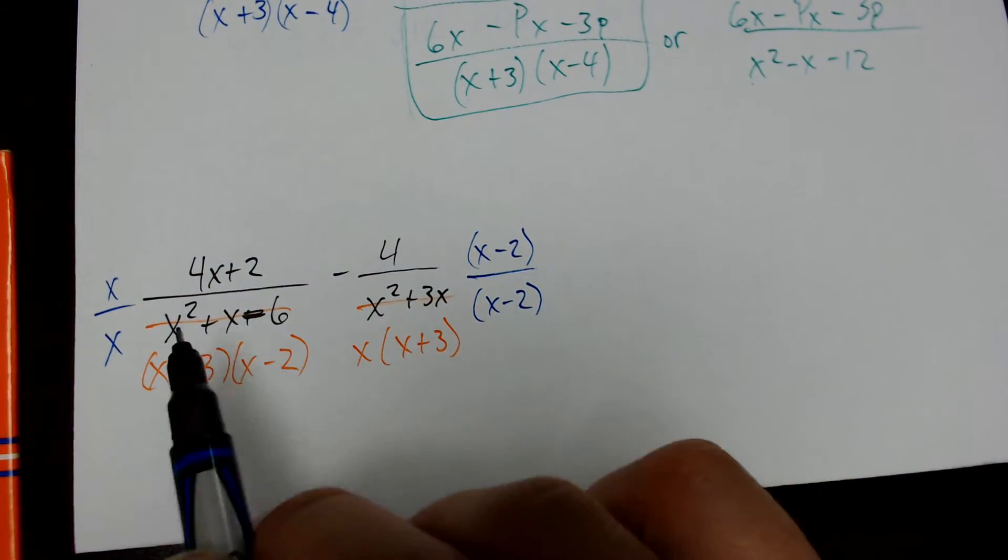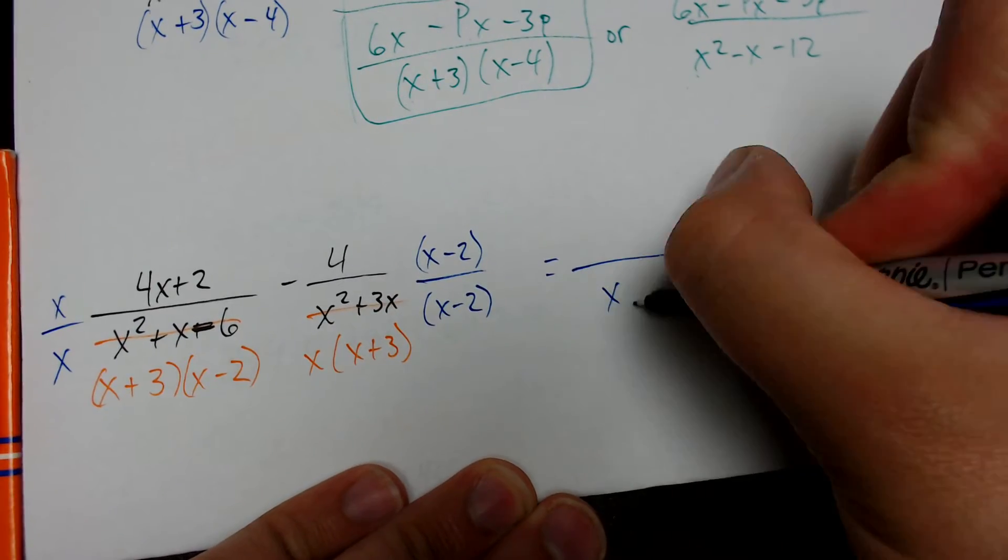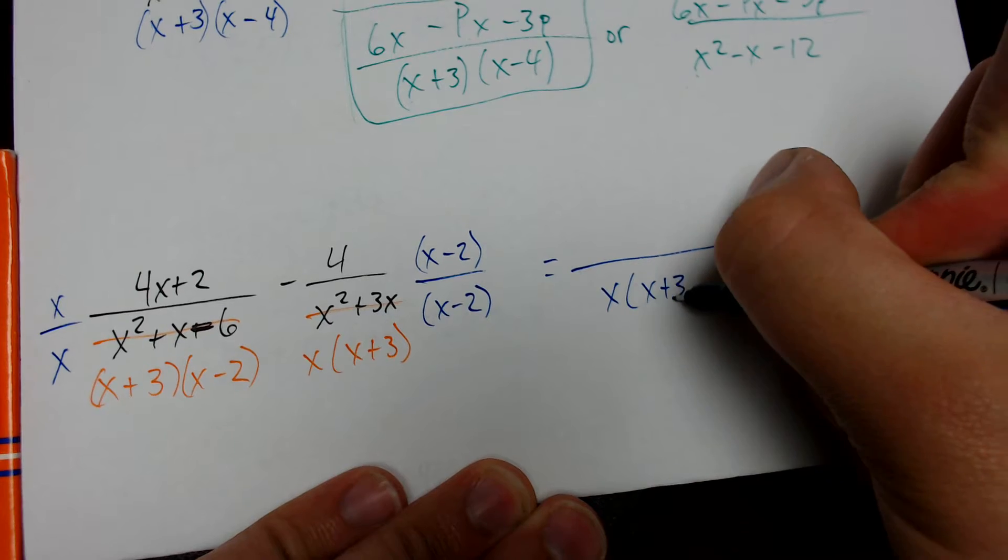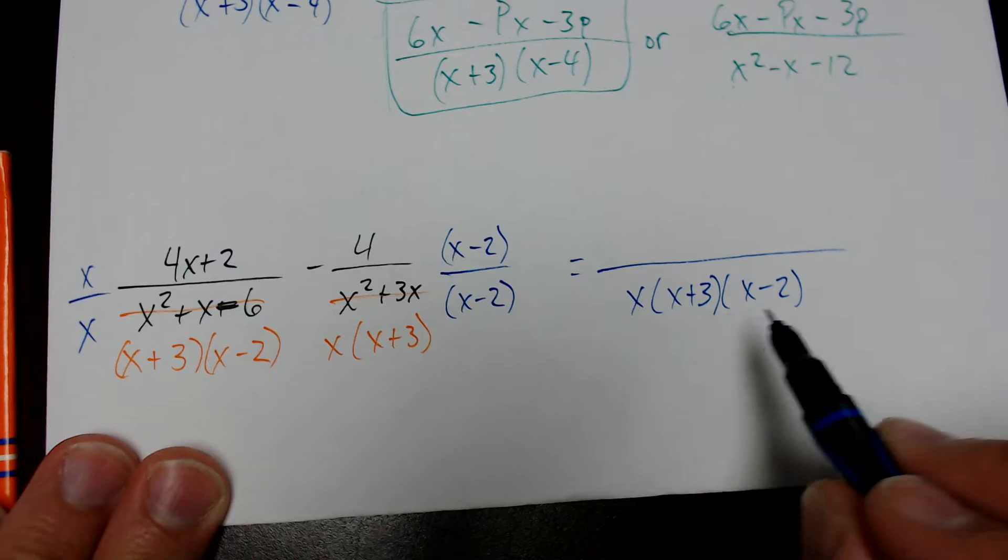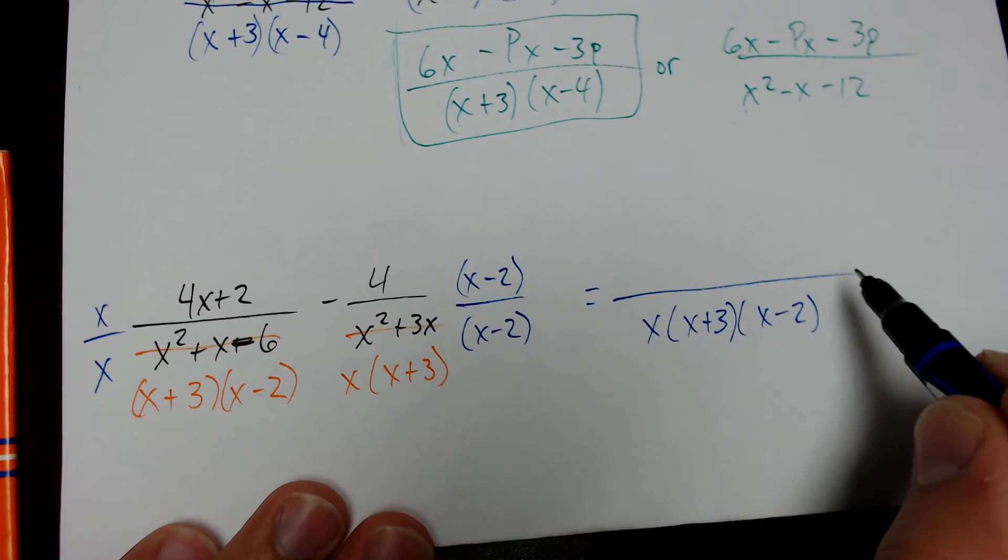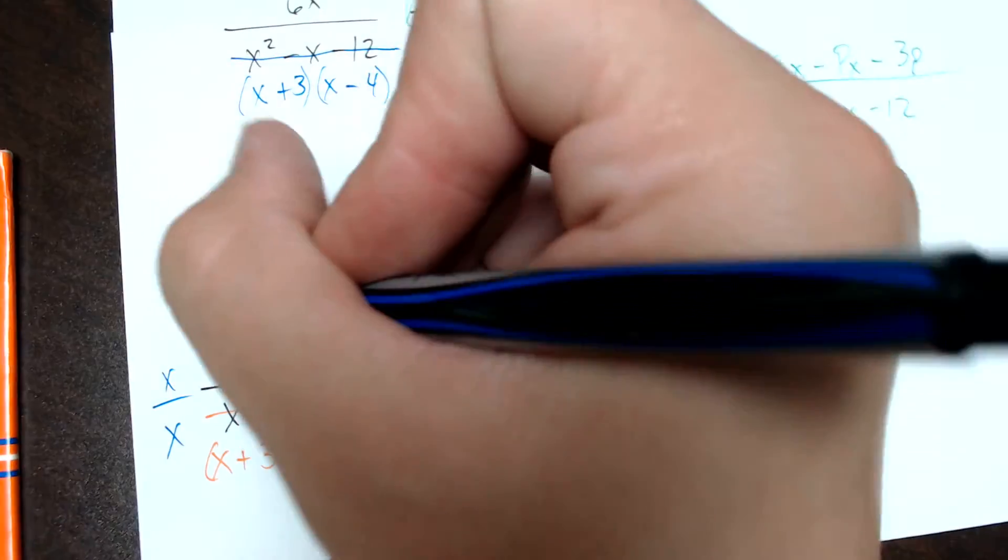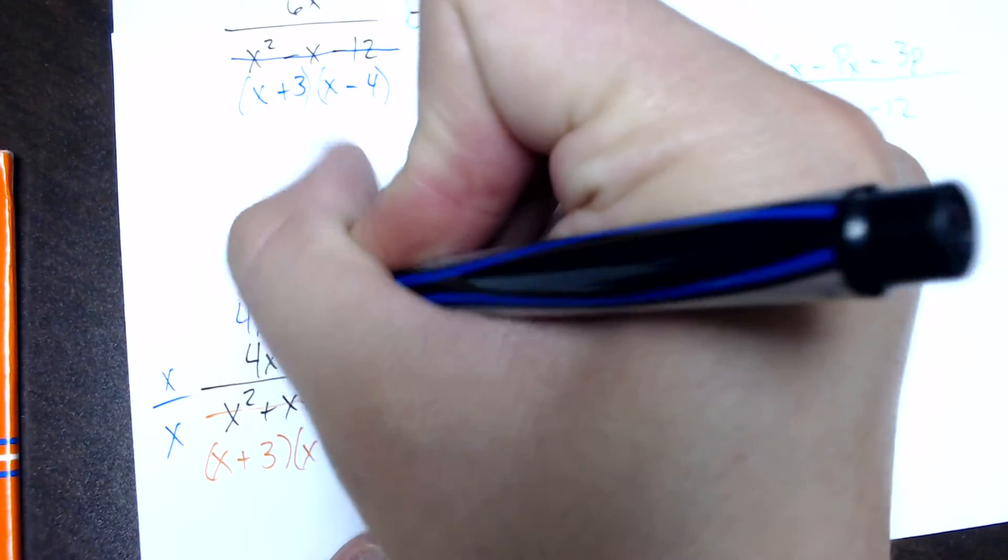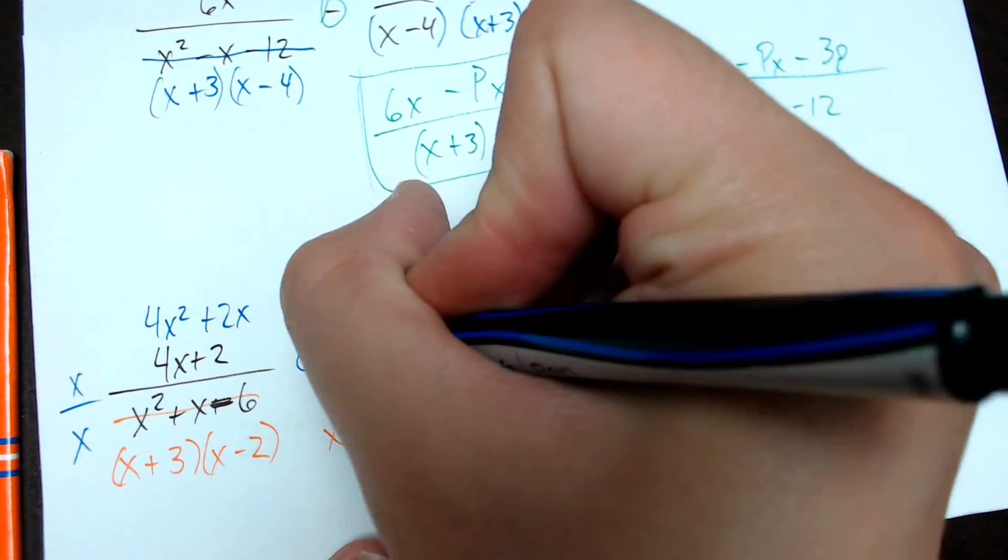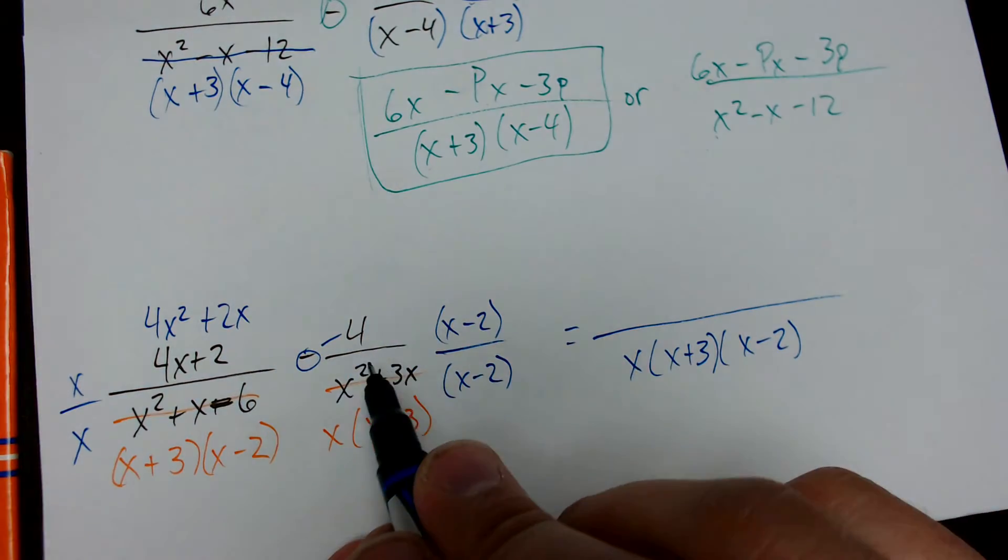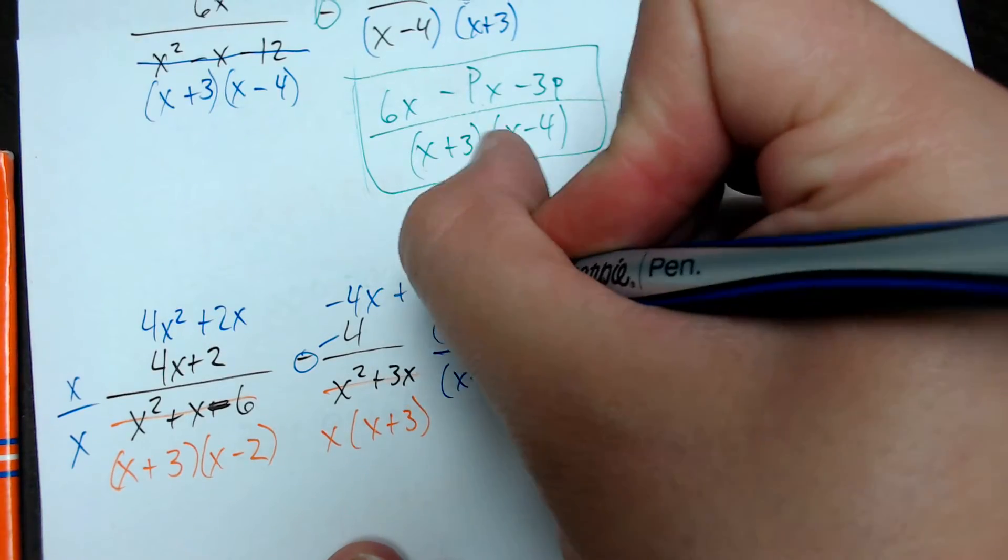So, when I multiply those, my common denominator is going to be x times (x + 3) times (x - 2). So, when I multiply these, that's what I get for both denominators. Now, what I really need to figure out is the numerators and then put those on top of that. When I multiply x times 4x plus 2, we use distributive property. This is going to become 4x² plus 2x. And then I've got negative 4. I'm going to go ahead and move this negative right there. Negative 4 times x gives me negative 4x. Negative 4 times negative 2 gives me plus 8.